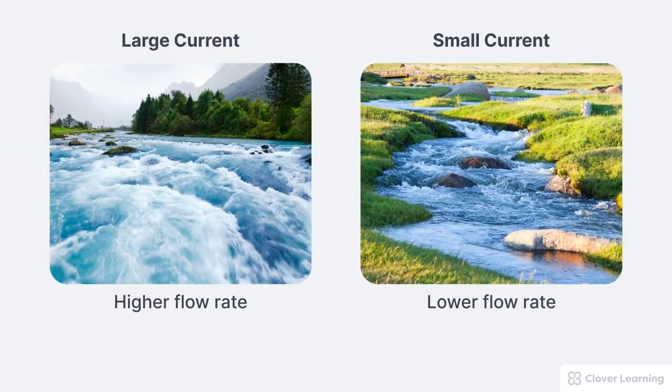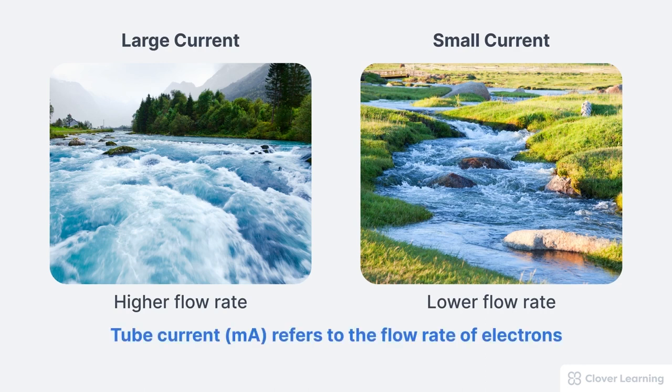The tube current is actually very similar to a current of water flowing down a river. A current is just the flow of water. If we have a large current of water, that means there's a higher flow rate of water moving down the river. If we have a small current of water, that means we have a lower flow rate. In the same way, tube current refers to the flow rate of electrons moving through the x-ray tube.